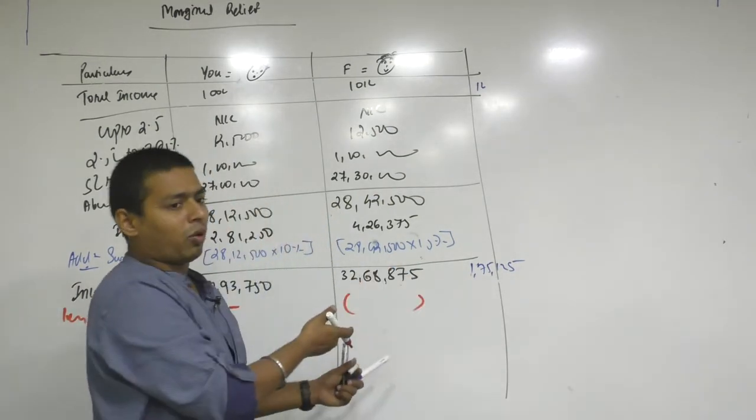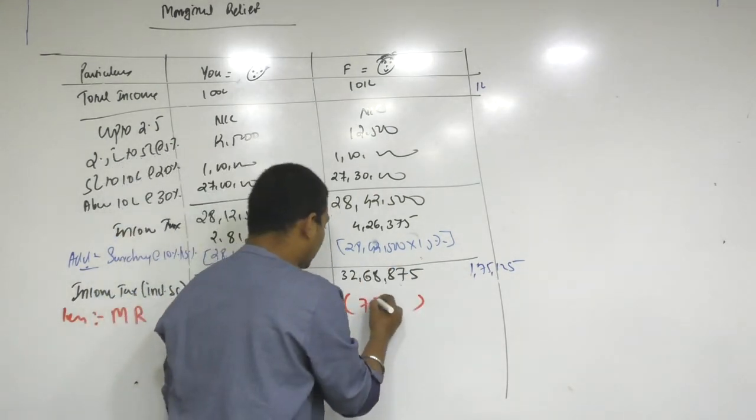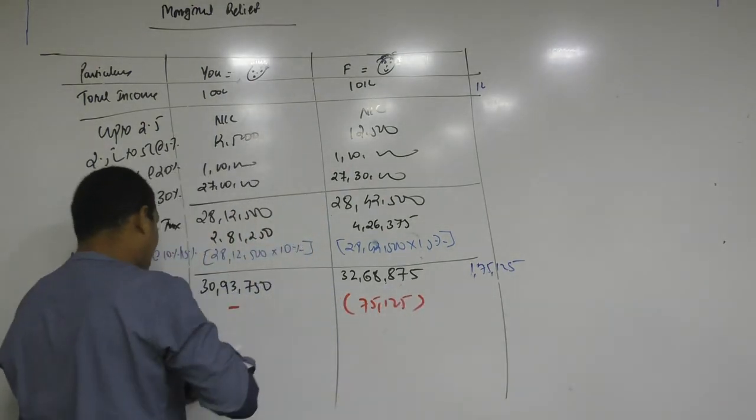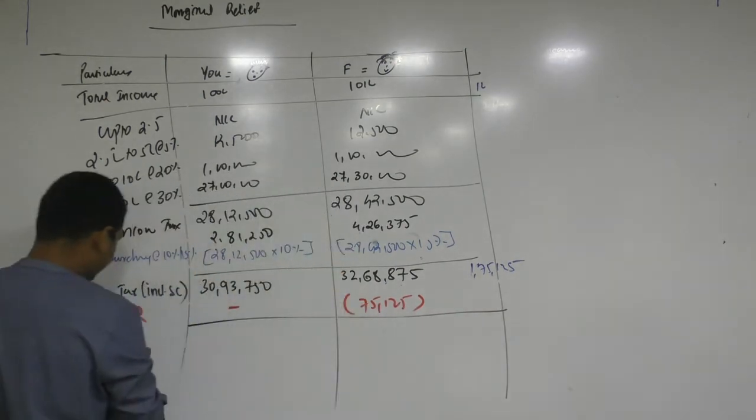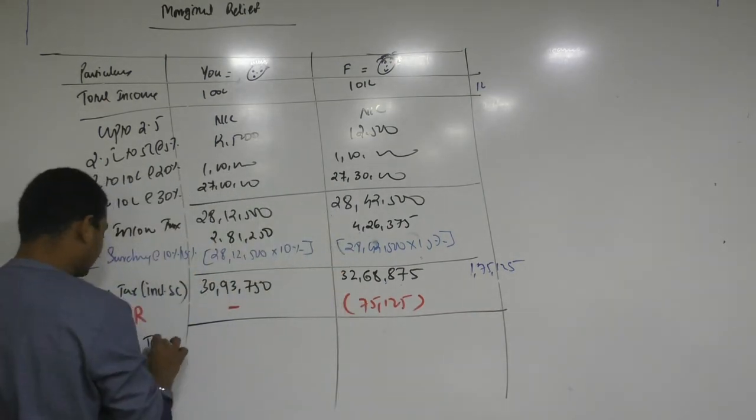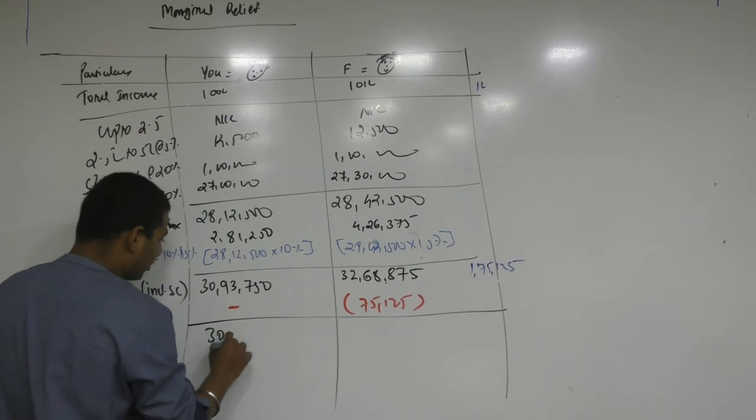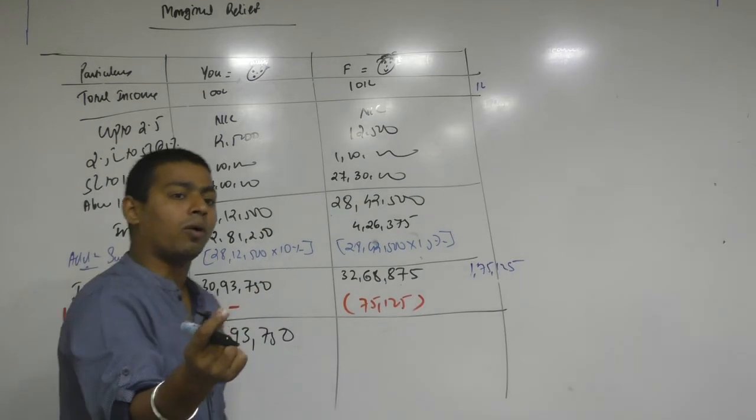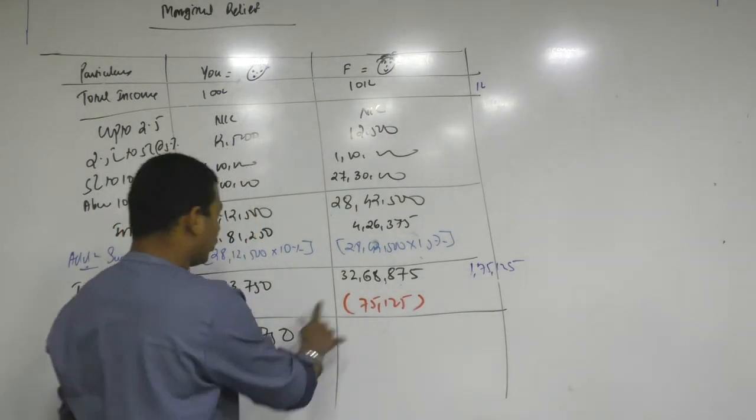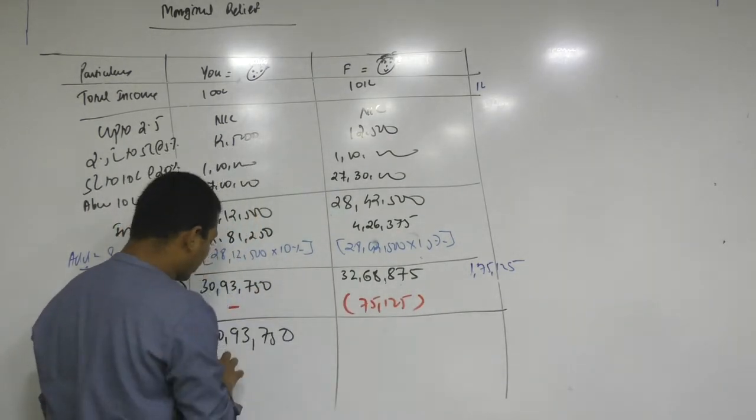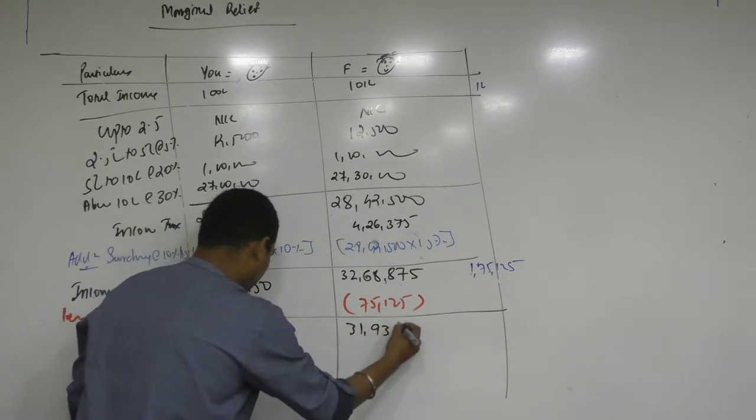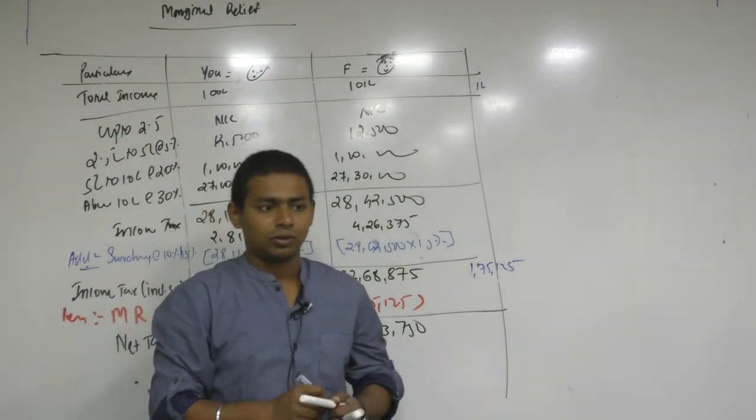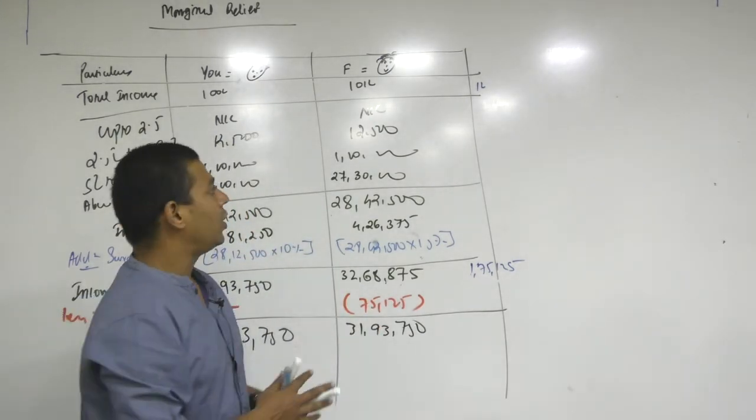You can already tell me what will be this number. 75,125. And I told you, you can also tell me net amount. Net amount of tax. You tell me. Net tax will be 30 lakh 93,750. This person's tax and this person's tax will be higher by only 1 lakh. So even before doing this calculation I can simply write 31 lakh 93,750. For tally purpose you can see this also. All right. Am I clear with this much?